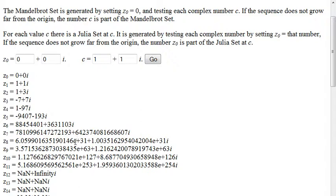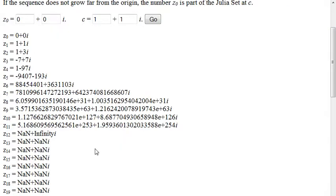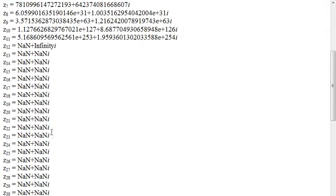This e, by the way, means times 10 to the power of. So times 10 to the power of 31. And eventually they get so big that the computer can't even tell us what they are. So that one is in fact an escaping sequence.